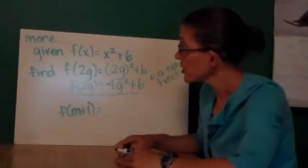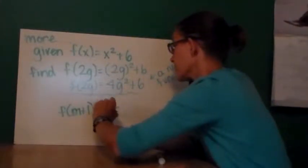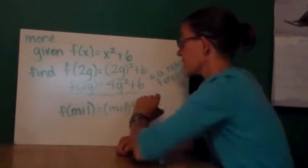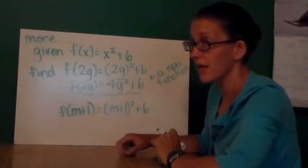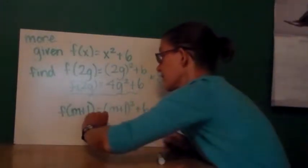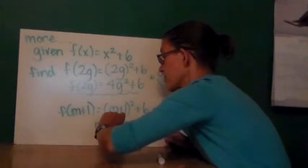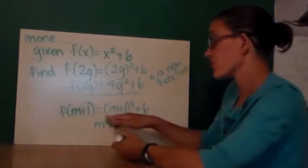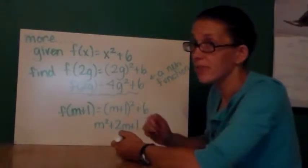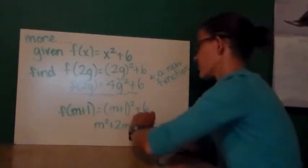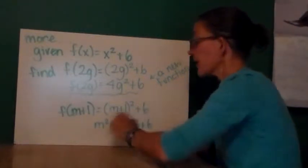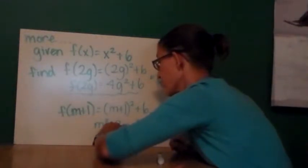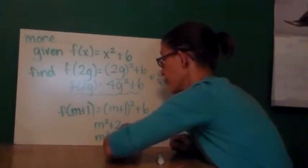In this example, I have to do f of m plus 1. Now I saw a lot of errors with this on various summer packets, so I think it's important that I've included this. m plus 1 quantity squared is not m squared plus 1. It is actually going to be equal to m squared plus 2m plus 1. If you don't believe me, you should write out m plus 1 two times and multiply them together using the distributive property. In this expression, I do have some like terms to combine. So I end up with the final answer that is yet another new function.